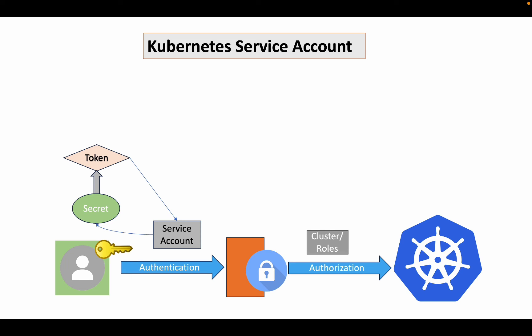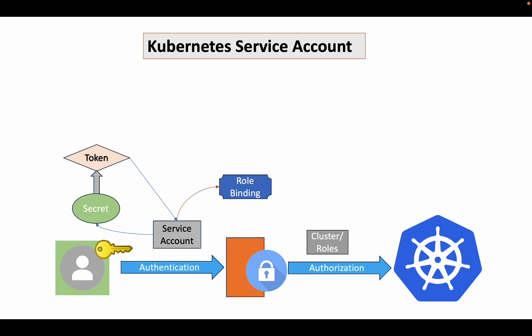Now you have a service account for authentication and a role for authorization. But can the pod access the resources yet? No — the role needs to be tied to the service account. That's where role binding comes into the picture. Role binding grants the permissions assigned to the role to the service account. The same is applicable for users as well.